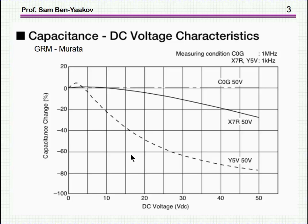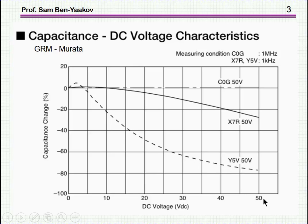Here is data on ceramic capacitors of different types: COG, X7R, and Y5V — these are different ceramic materials. As you can see, the capacitance is a function of the DC voltage on them. These are 50-volt capacitors, supposed to operate up to 50 volts without any problem. If we look at the worst of them, the Y5V, there is a change as we approach 50 volts of about 80%; that is, what is left is only 20% of the capacitance. That's a lot, and obviously when you put it in a circuit and simulate it, you want to see the effect of this change on the operation of the electronic circuit.